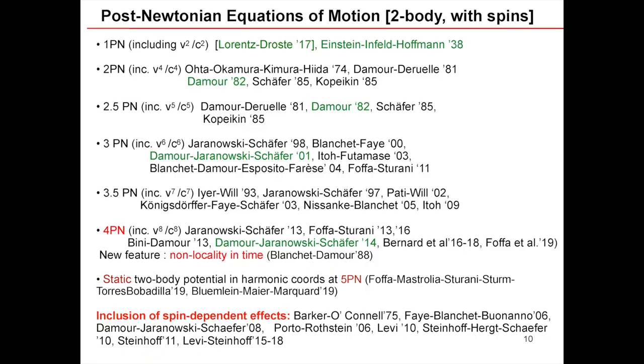The first correction in v²/c² beyond Newton was obtained by Einstein and Infeld-Hoffmann in 1938 — actually it was obtained before by Lorentz and Droste, but everybody forgot this paper published in a Dutch journal, and it was totally ignored for 20 years. The first calculations beyond v⁴/c⁴ were done in the 80s, then v⁶/c⁶ in 2000, and it's only a few years ago that one could go to the fourth approximation, meaning eighth order in v/c.